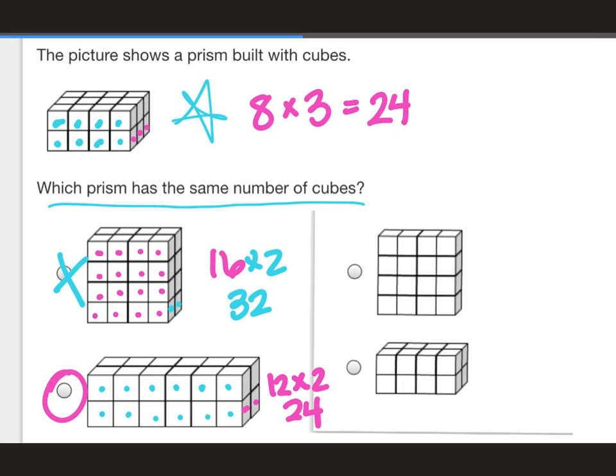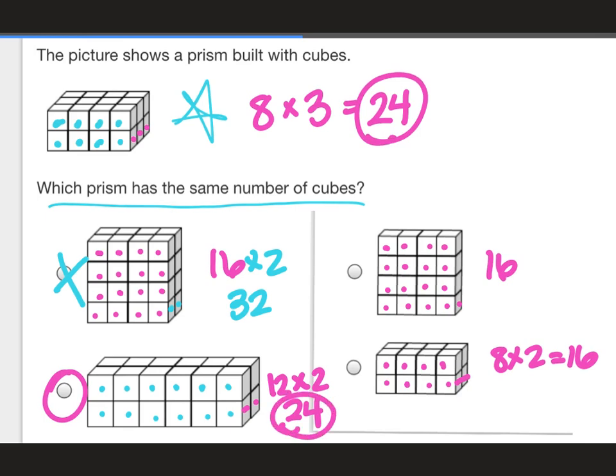So this is your answer. If you looked at this one, it only has one, two, three, four, five, six, seven, eight, nine, ten, eleven, twelve, thirteen, fourteen, fifteen, sixteen, and only one row. So this one's only 16. This one's one, two, three, four, five, six, seven, eight, and it goes back two. So this one's also 16. So when we were looking, we wanted the one that matched and had the same number of cubes. That's why we chose B.